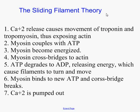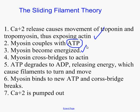What are those thick and thin filaments? The thick filaments are made of a protein called myosin. The thin filaments are made of three different proteins: actin, troponin, and tropomyosin. So there are four different proteins that make up the filaments which are going to cross over each other.